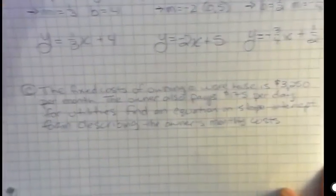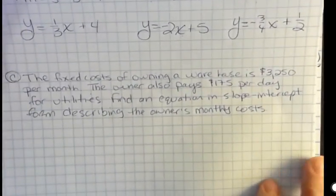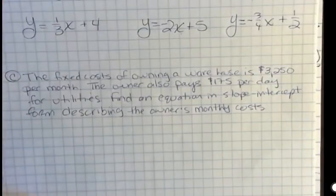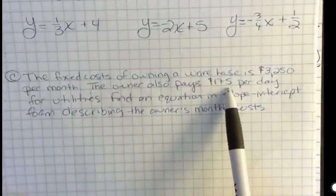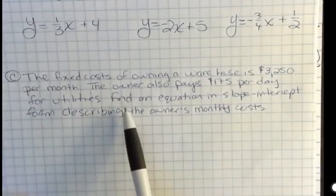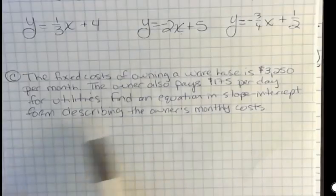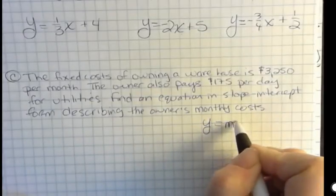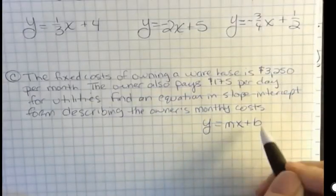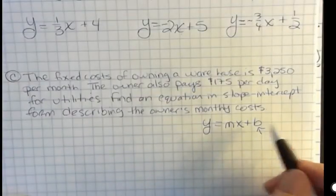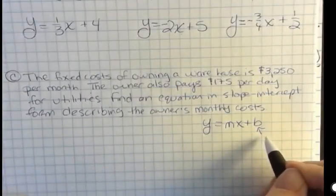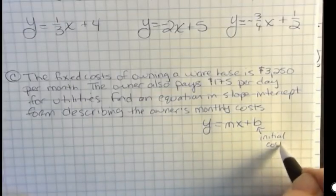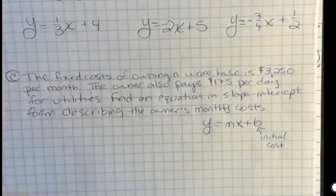And the last thing is just an application of a word problem. They're saying the fixed cost of owning a warehouse is $3,250 per month. Maybe that's the lease payment, and the owner also pays $175 per day for utilities. Find an equation in slope-intercept form describing the owner's monthly cost. Let's take a second to remember this. The y-intercept is b, and that is the initial, in this case, the initial cost, or we can say the fixed cost, right?